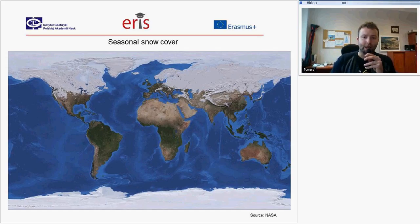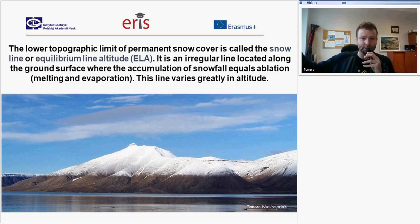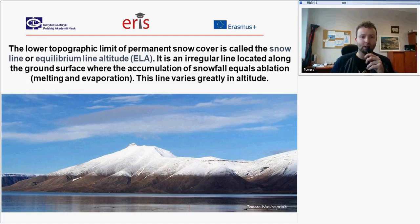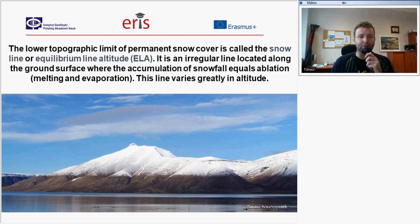Seasonal snow cover can extend across land. The snow can stay throughout the summer and won't entirely melt. The topographic limit of permanent snow — snow that persists for continuous years — is called the snow line or equilibrium line altitude. This is an irregular line along the ground surface where the accumulation of snowfall equals ablation. Above this line there is higher accumulation of snow, and below it ablation dominates, so snow won't persist below this equilibrium line altitude, which varies greatly in different parts of the world.